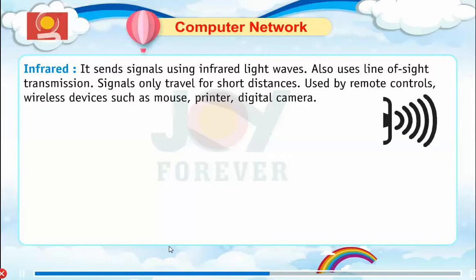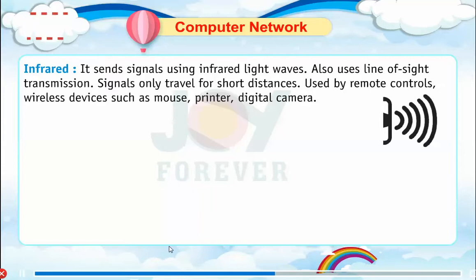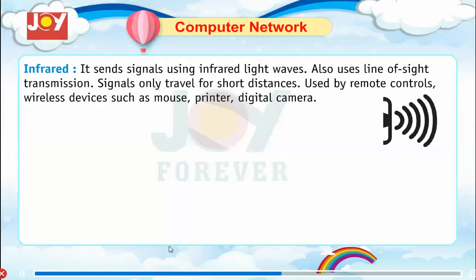Wireless media — Infrared: sends signals using infrared light waves and also uses line-of-sight transmission. Signals only travel for short distances. Used by remote controls and wireless devices such as mouse, printer, and digital camera.